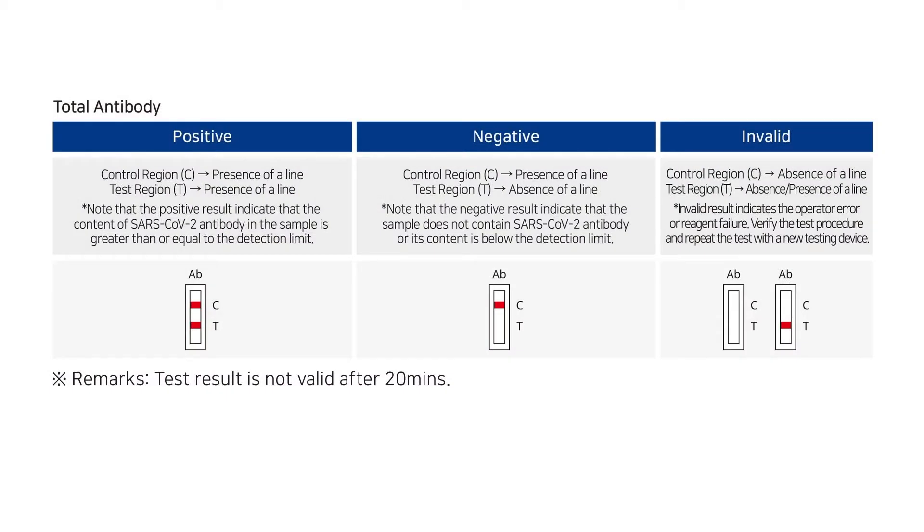Total antibody test result is interpreted by the formation of a line on the test line. If lines appear on the control and test line, the result is positive.